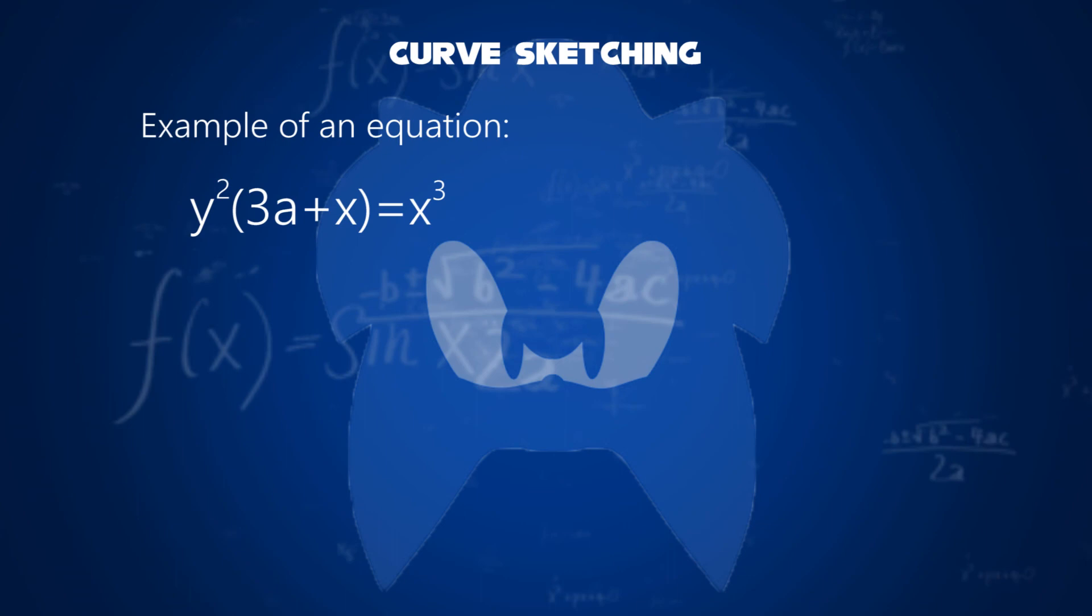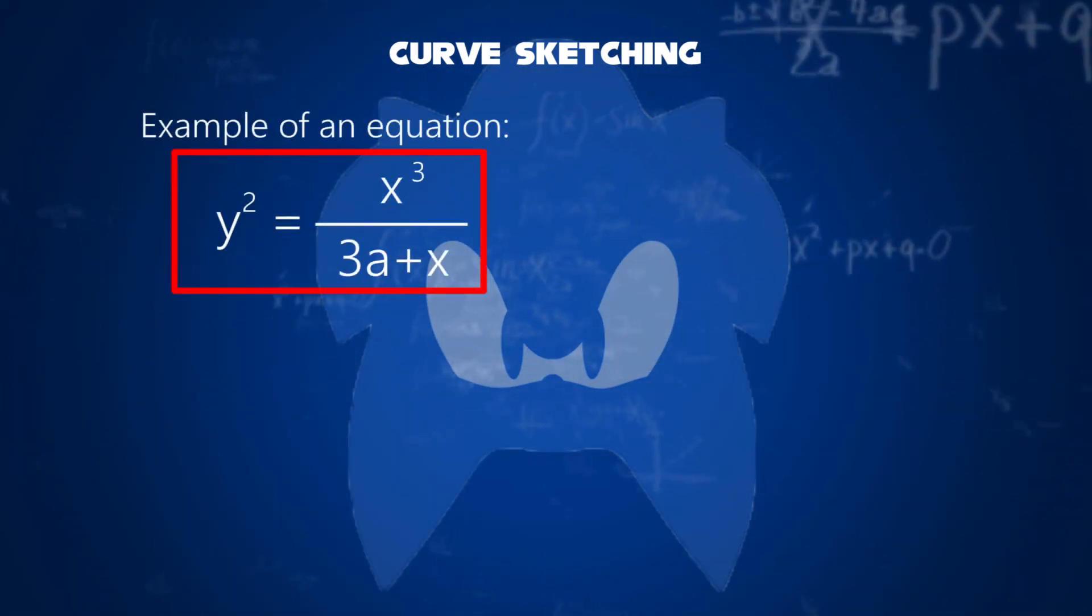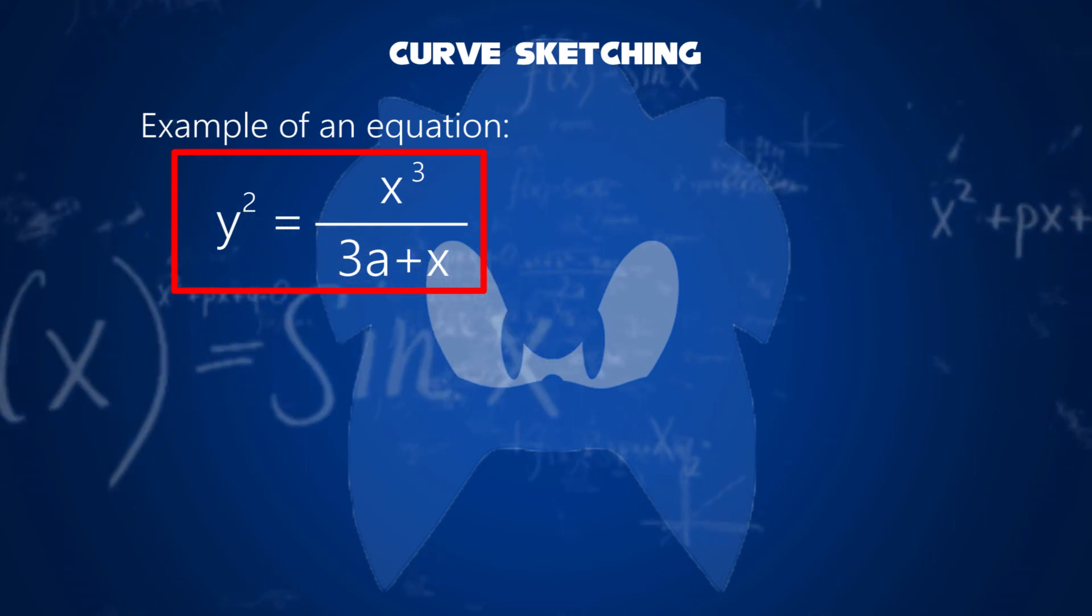For example, let's say y squared times 3a plus x equals x cubed. Then y squared equals x cubed divided by 3a plus x.